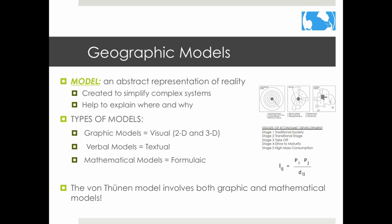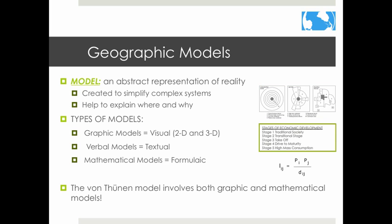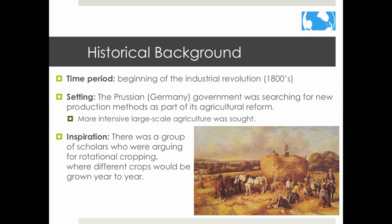Models aren't real, but they do simplify the world and help explain complicated systems. Models help explain where and why things happen. There are three types of models: graphic models, verbal models, and mathematical models. The Von Thünen model involves both graphic and mathematical models.